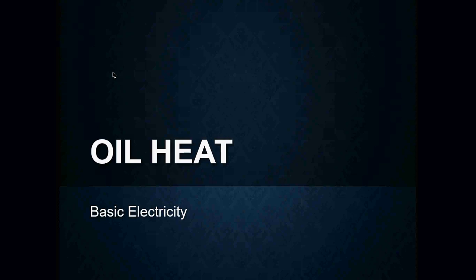For today we are going to be getting into our oil heat course, and obviously we always got to start with the basics. We got to understand basic electricity — the terms and how electricity flows — over and over again. We have to understand the movement of electricity, how it flows through a circuit, why it does what it does, in order to understand how an oil-fired unit works, or any piece of equipment that uses electricity to operate.